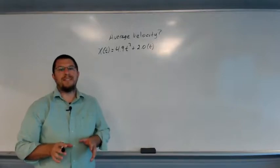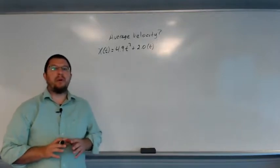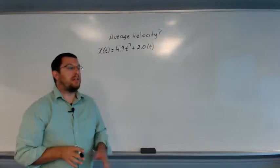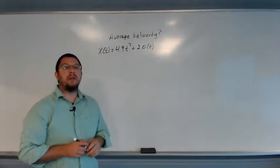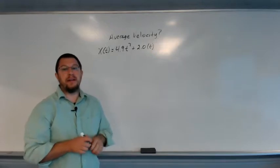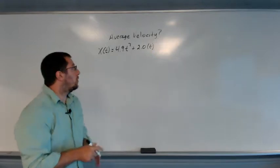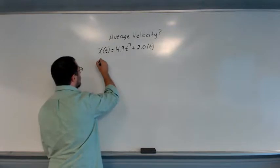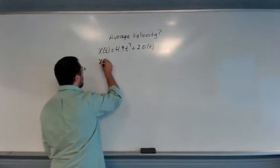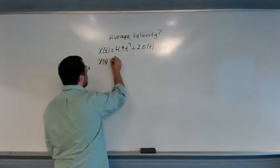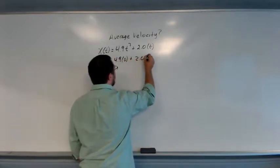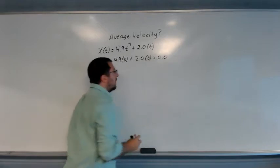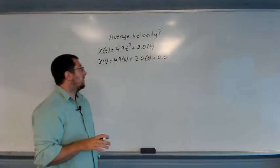We left our last example where we were wanting to find the average velocity for a particle moving under this position versus time function after three seconds. So we're going to assume that our initial position is zero.